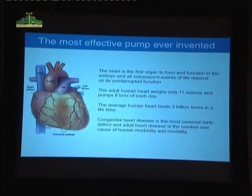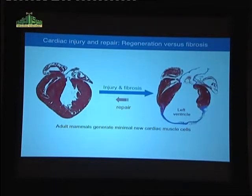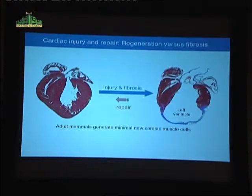This slide summarizes the fundamental problem — really the number one biomedical problem in the world today — and that is that the heart cannot regenerate or repair itself following injury, and the default response of the adult heart to injury is fibrosis. This is a histological section through a mouse heart, but a human heart would look much the same. This is the chamber of the left ventricle, which pumps blood to the body, and this is the right ventricle.